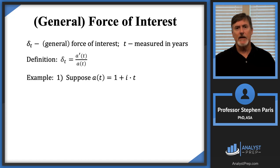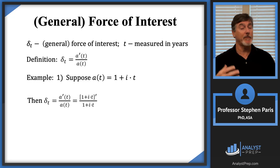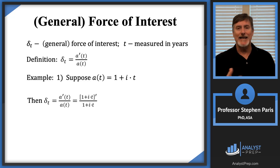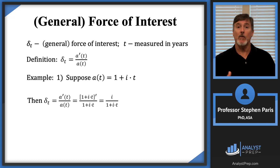Let's look at a few examples. Suppose a(t) = 1 + i·t. You should recognize that as the accumulation function for simple interest. The derivative is taken with respect to t — i is treated as a fixed constant, not a variable. In the numerator, the derivative of 1 + i·t with respect to t is just i. In the denominator, you write the accumulation function, which is 1 + i·t. So i divided by 1 + i·t is the force of interest that corresponds to a simple interest context.